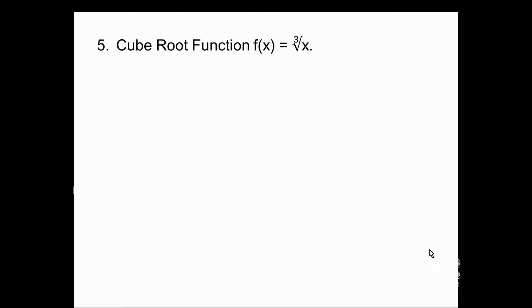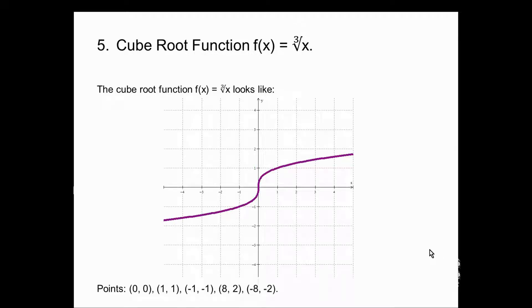Our fifth basic function: the cube root function, f(x) = ∛x. The points I plotted were (0, 0), (1, 1), (−1, −1), (8, 2), and (−8, −2). It also has symmetry with respect to the origin — if you rotate it through 180 degrees, it's the same graph.